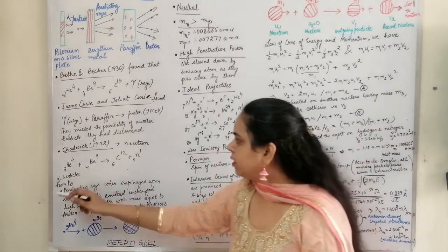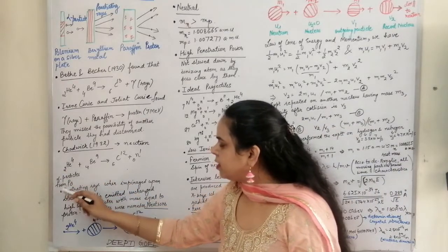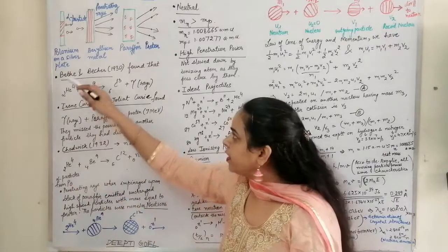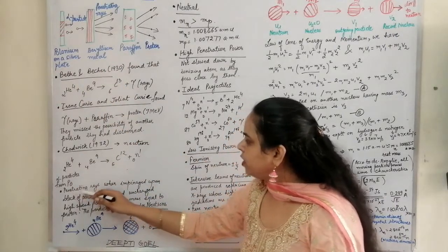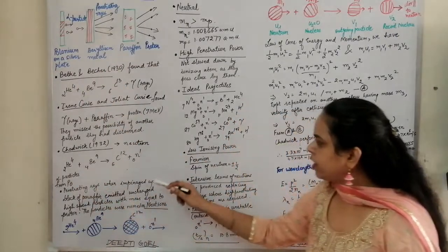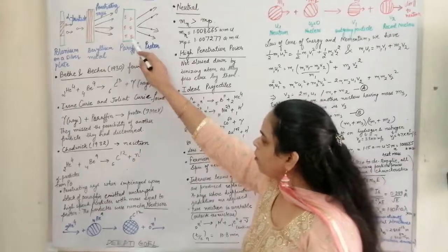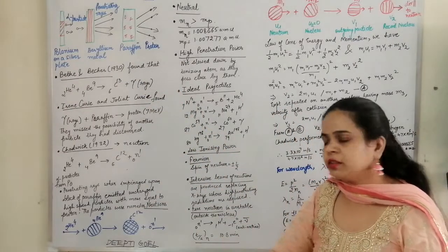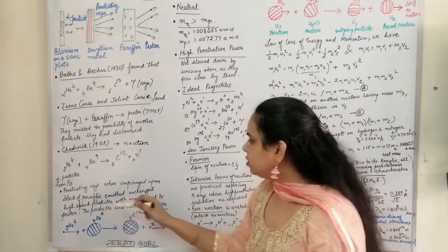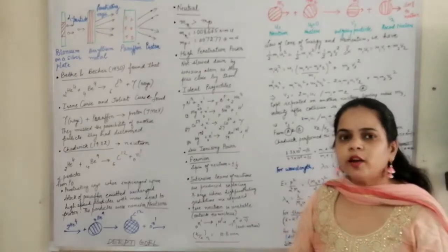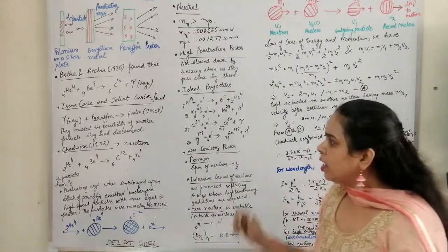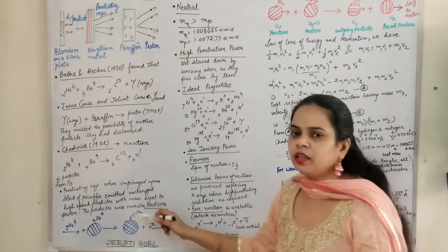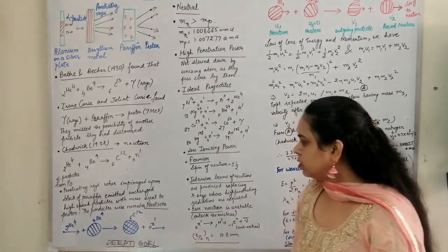Chadwick said that the alpha particles coming out when polonium strikes the silver metal — when these penetrating rays were impinged upon a block of paraffin — emitted uncharged, highly penetrating particles with mass equal to that of the proton but with neutral charge, and these particles were named neutrons.